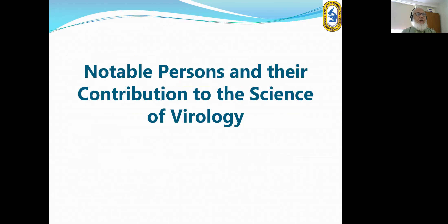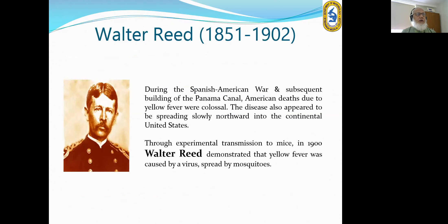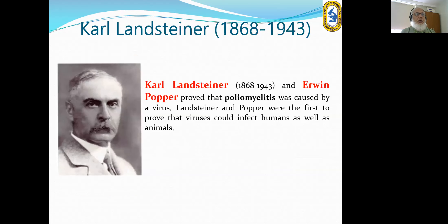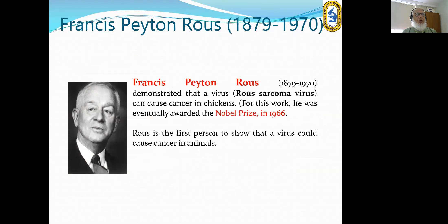Notable persons and their contributions: Walter Reed demonstrated that yellow fever was caused by virus and spread by mosquitoes. Karl Landsteiner and Erwin Popper proved that poliomyelitis was caused by a virus. Francis Peyton Rous demonstrated that a virus can cause cancer in chickens — he received the Nobel Prize in 1966 and the virus was named Rous sarcoma virus. Rous was the first person to show that a virus could cause cancer.